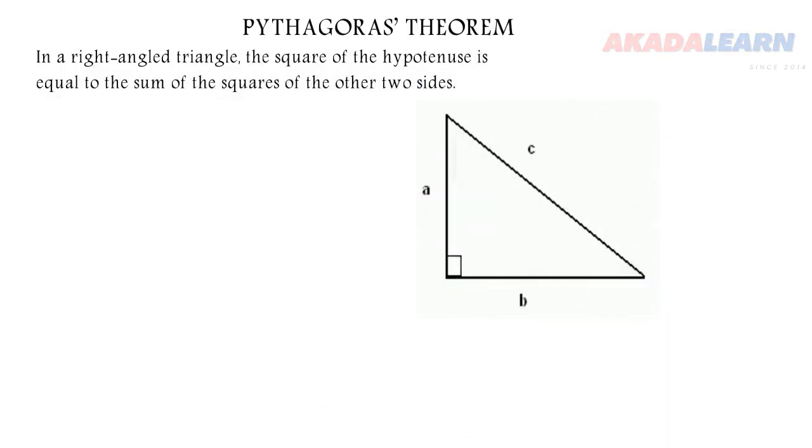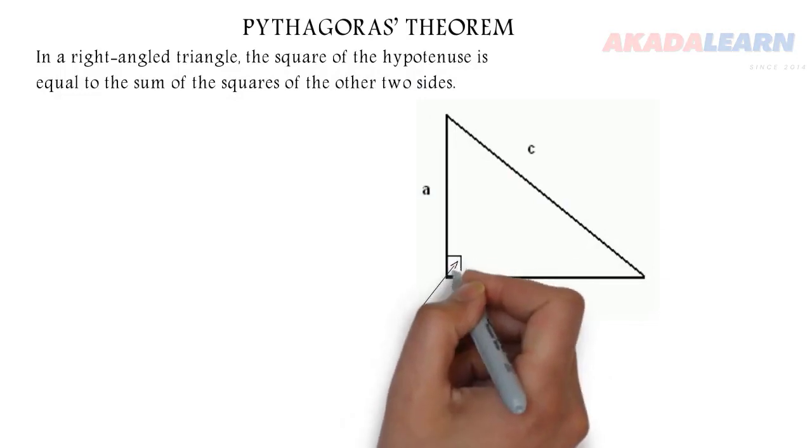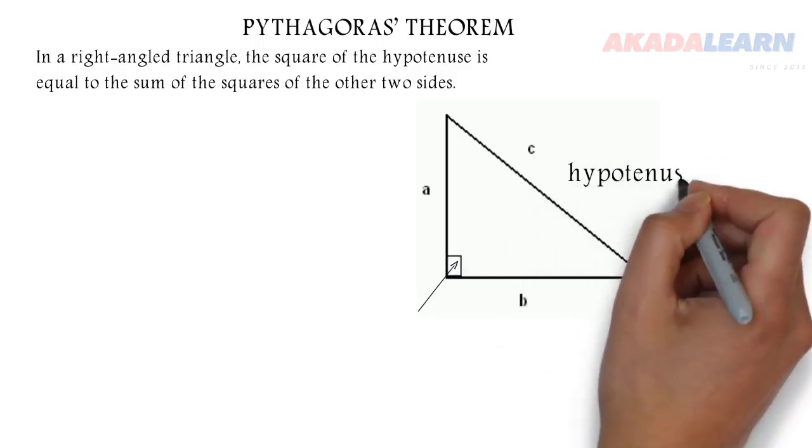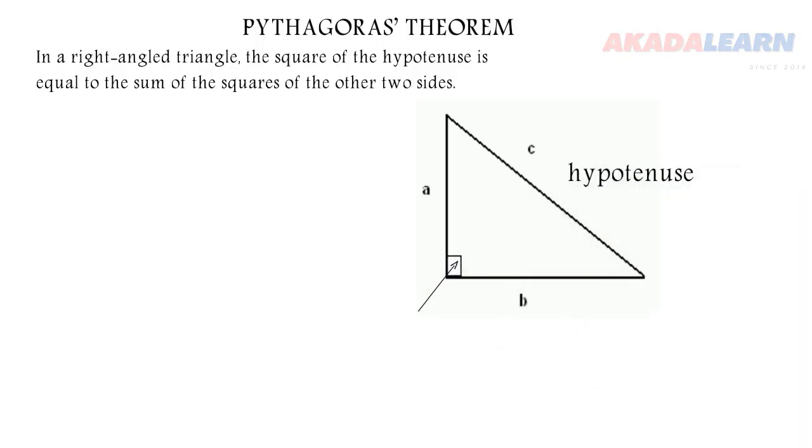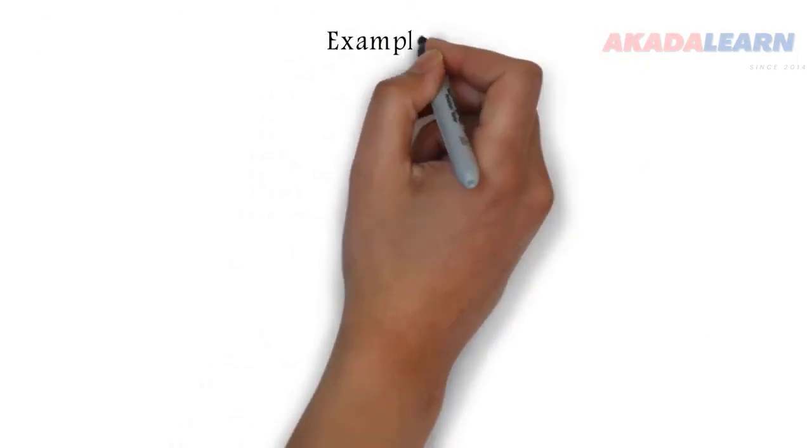We have a right-angled triangle there. That sign indicates the right angle, meaning the angle between a and b is 90 degrees. That is the hypotenuse, which is the longest side, the side facing the right angle. So c² = a² + b². That is what Pythagoras' theorem states. Let's see its application in solving problems.